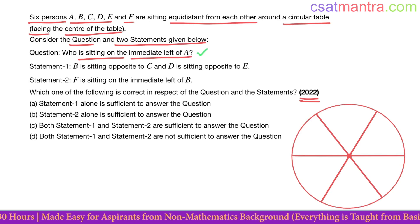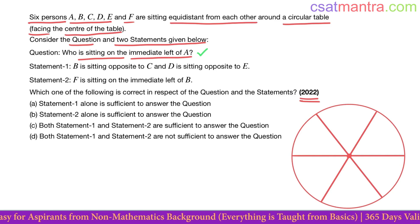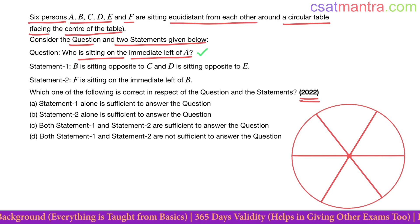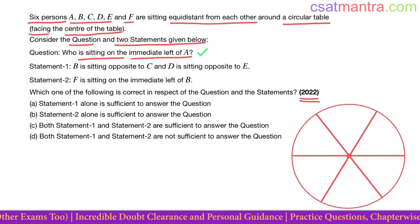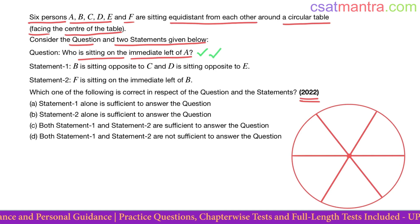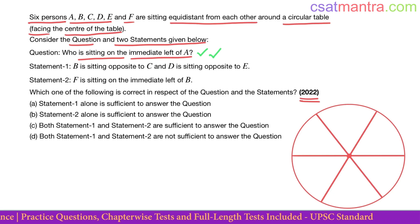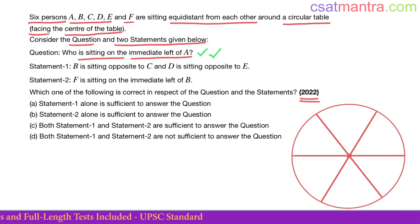This question needs to have a single answer — it can be either B, C, D, E, or F. We cannot have different answers for different cases. There can be any number of possibilities, but in every single possibility we need to have the same answer. That means we are answering this question with hundred percent certainty — no matter what happens, this person is going to be on the immediate left of A.